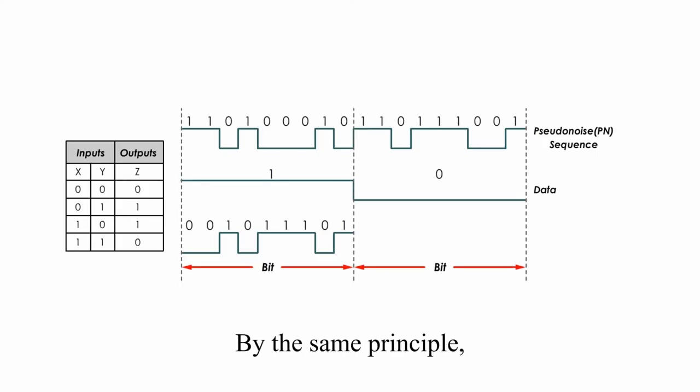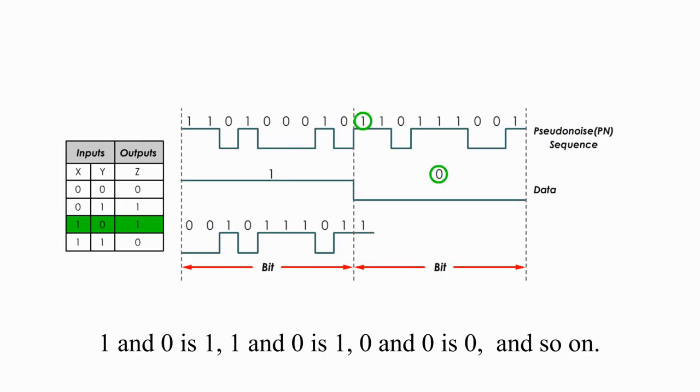By the same principle for bit 0, we use the same table again, 1 and 0 is 1, 1 and 0 is 1 again, 0 and 0 is 0, and so on.